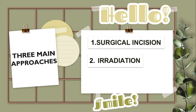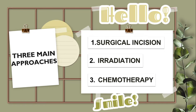Number two, Radiation. Radiation is the use of high energy radiation from X-rays, gamma rays, neutrons, and other sources to kill cancer cells and shrink tumors. And the third is Chemotherapy. Chemotherapy is the treatment that uses drugs to stop the growth of cancer cells, either by killing the cells or by stopping them from dividing.